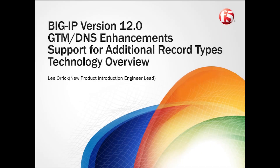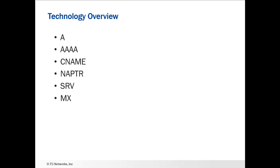In this module, we are going to do a technology overview of some of the new DNS record types that are supported and the GTM DNS enhancements, which add support for additional record types. The resource record types we are going to talk about are A, Quad A, CNAME, NAPTR, SRV, and MX records.